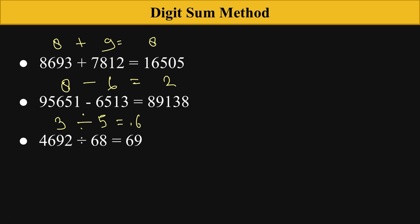In addition, you can see the digit sum of this number is 8, and the digit sum of this number is 9. 8 plus 9 is how much? You can also omit the 9, so it's 8.